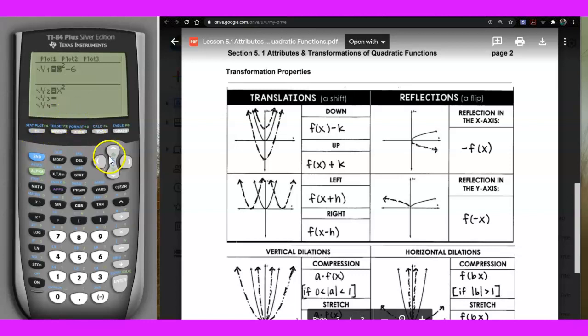So let me go ahead and make this one my parent function. And this one here will be the new function which is going to have the transformation. So now I'm going to add three and I'm going to show you how it looks like when it's being graphed.